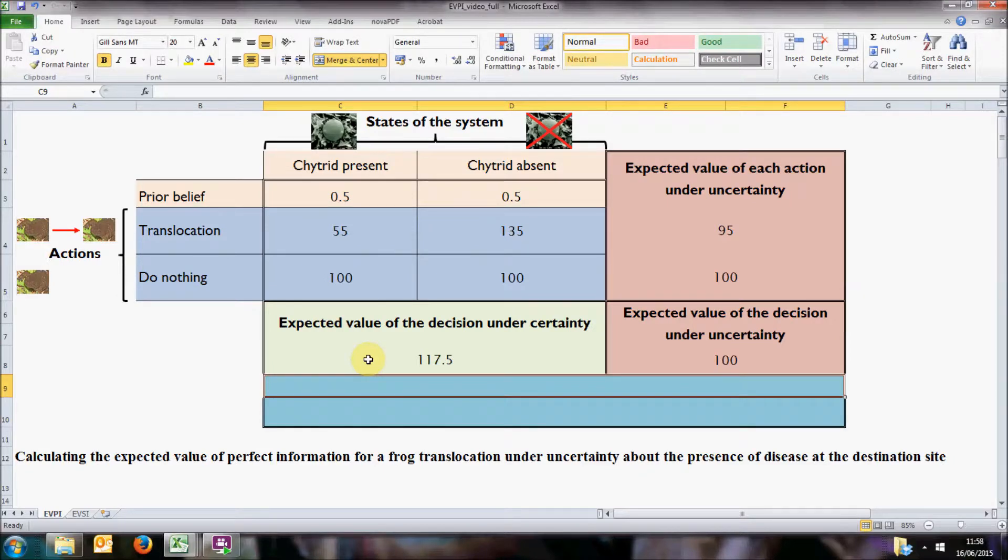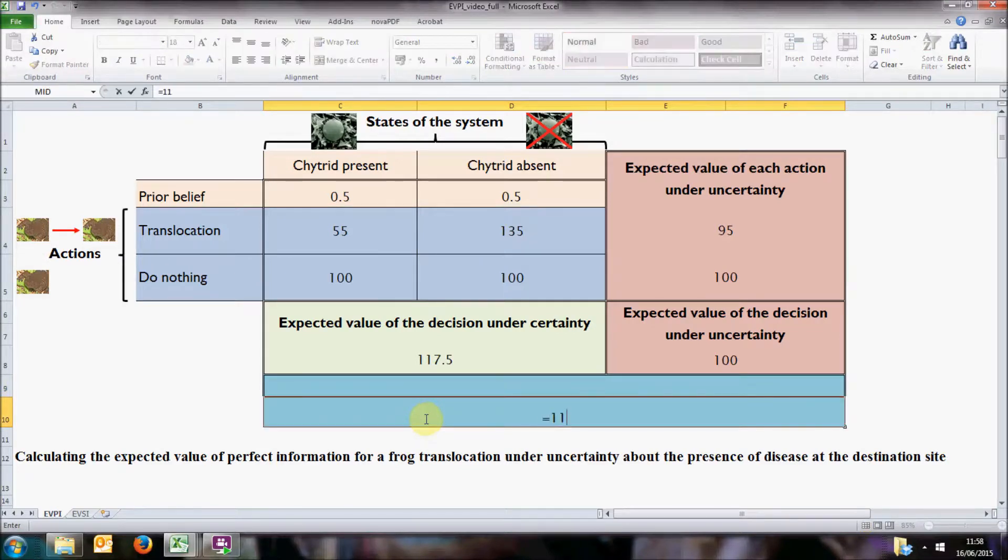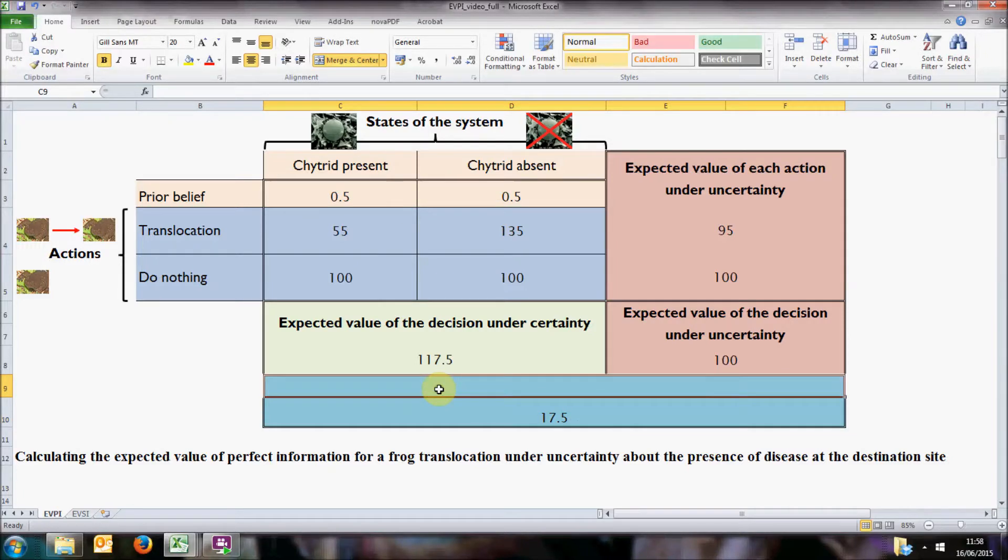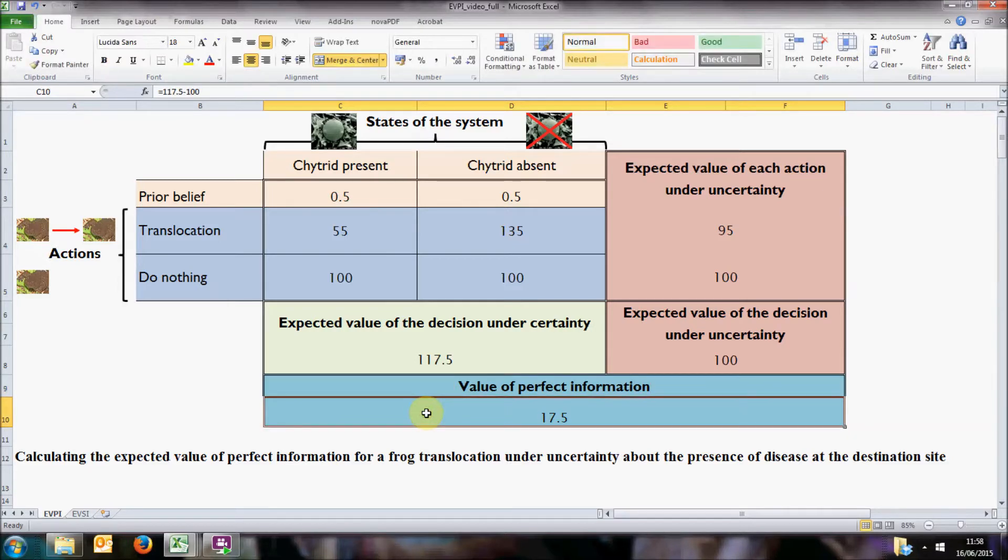Now the difference between the value of the decision when perfect information is available and the value of the decision when we have to make it under uncertainty is the value of perfect information. In this case, if we could eliminate uncertainty, we would expect a gain of 17.5 individuals.